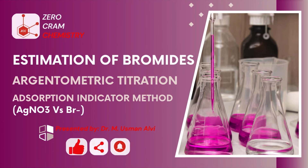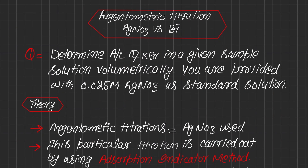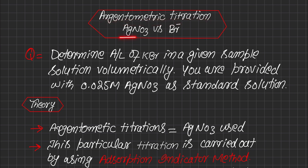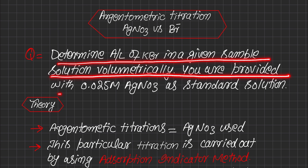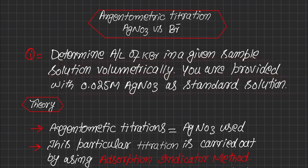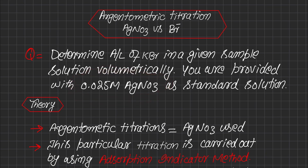In this particular titration we will adopt the adsorption indicator method. This is an Argentometric titration between silver nitrate and bromide. The objective is to determine the amount per liter of KBr (potassium bromide) in a given sample solution volumetrically. These titrations are called Argentometric titrations because of the presence of silver nitrate — in Latin, silver means Argentum.